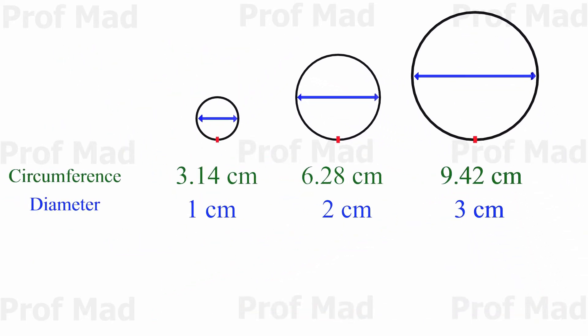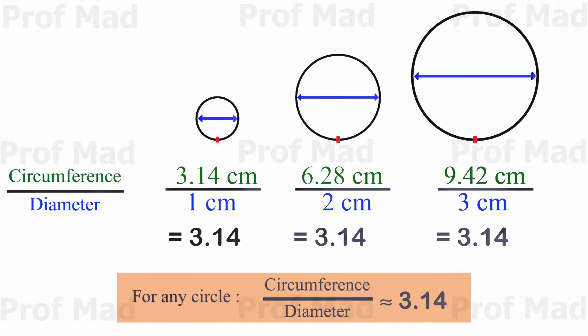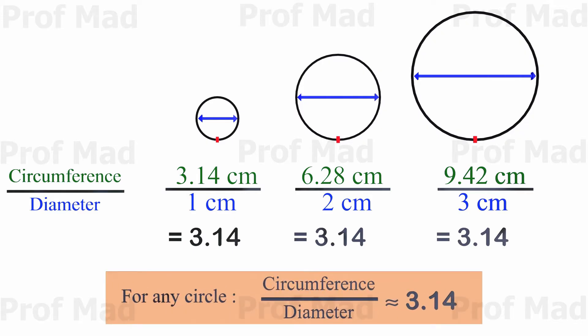If we divide the measured circumference by its diameter, something interesting happens. We always get a special number, around 3.14. Isn't that amazing? For any circle, the ratio between circumference and diameter is around 3.14.